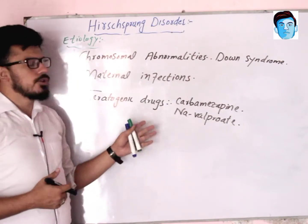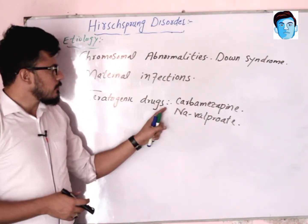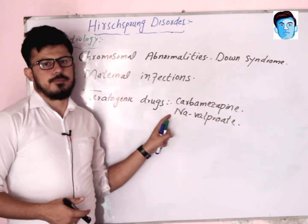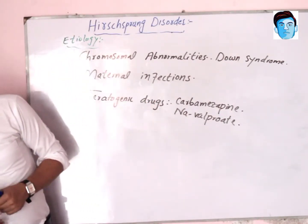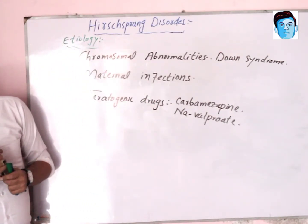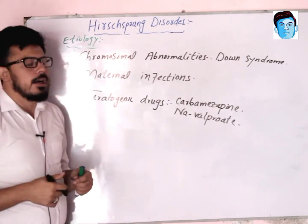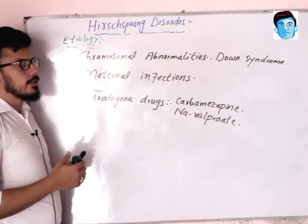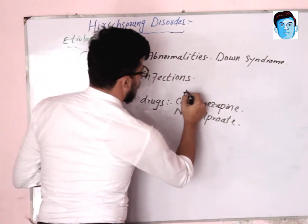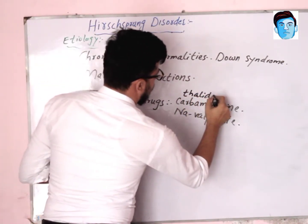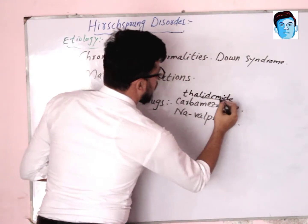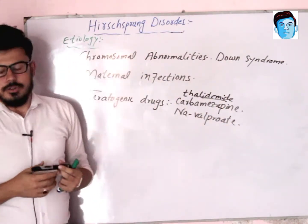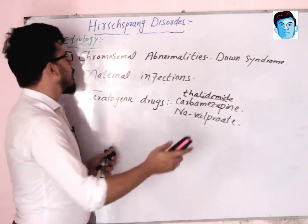Certain teratogenic drugs can also lead to Hirschsprung disease, such as carbamazepine, sodium valproate, and thalidomide. These are the important drugs associated with this disease.